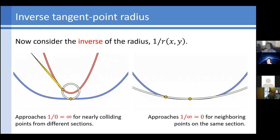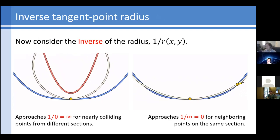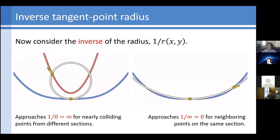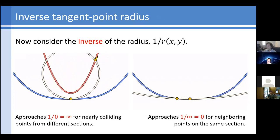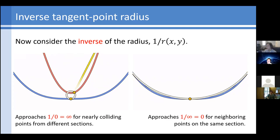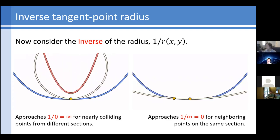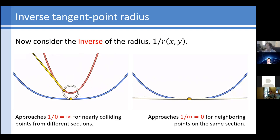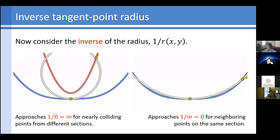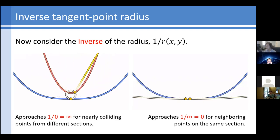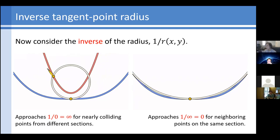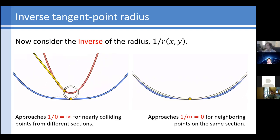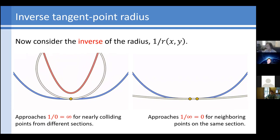We're going to call this the tangent point radius, and the sphere itself the tangent point sphere. What we need is the inverse of that radius, 1 over r. For points on different sections that are nearly colliding, the radius approaches zero, so the inverse radius approaches infinity — that's the infinite potential barrier we want to prevent intersections. On the other hand, if the point is approaching along the tangent direction, the radius approaches infinity, so the energy — the value of this inverse — approaches zero. Contributions from neighbors on the same curve vanish as you get closer, and this is true independently of resolution.